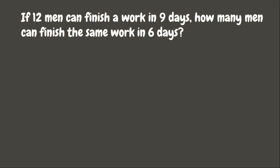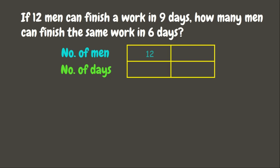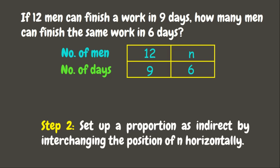In solving inverse proportion, the first step is to identify the quantities used in the problem. Here we have the number of men and the number of days. It is given that 12 men can finish a work in nine days. Now for six days we are still looking for it — that's why let's put n first. The next step is to set up a proportion. In inverse proportion, we interchange the position of n horizontally with the given number 12.